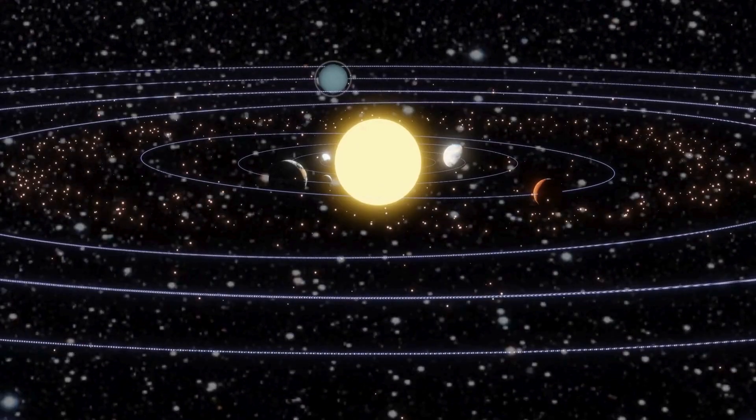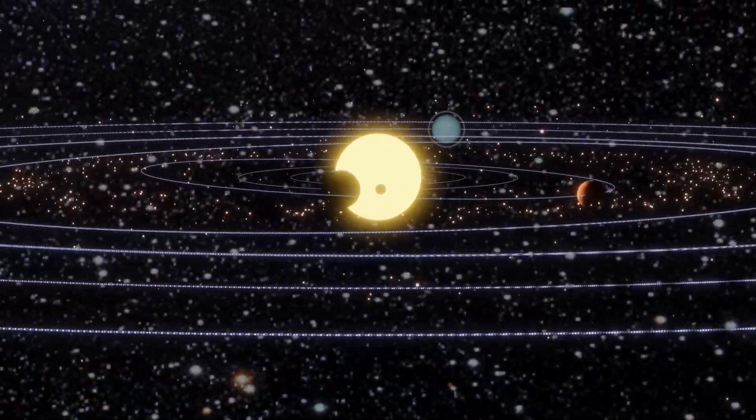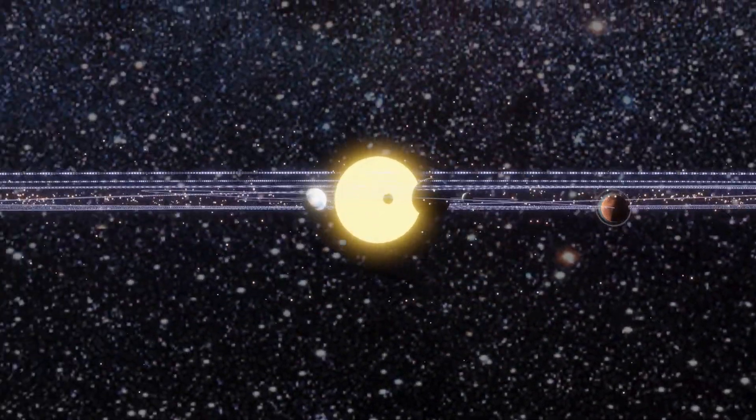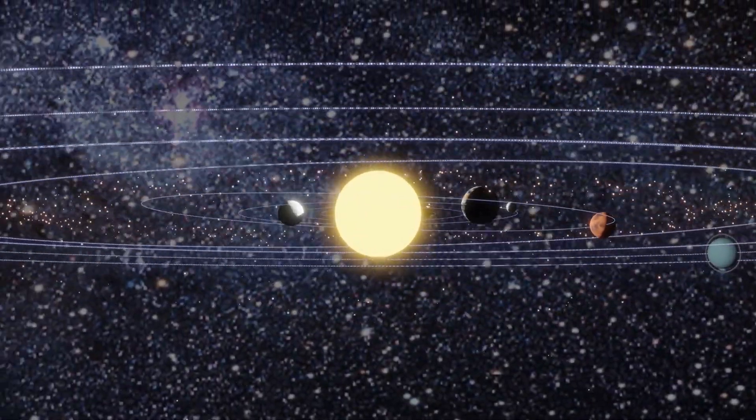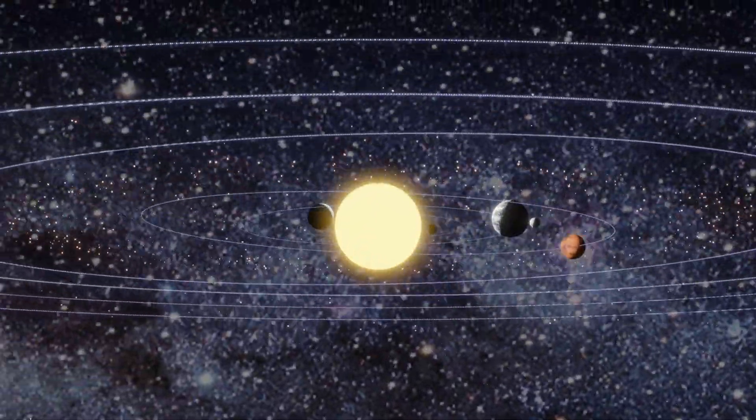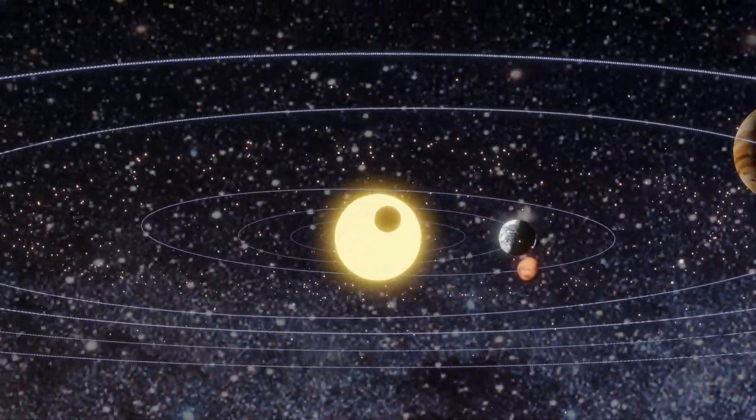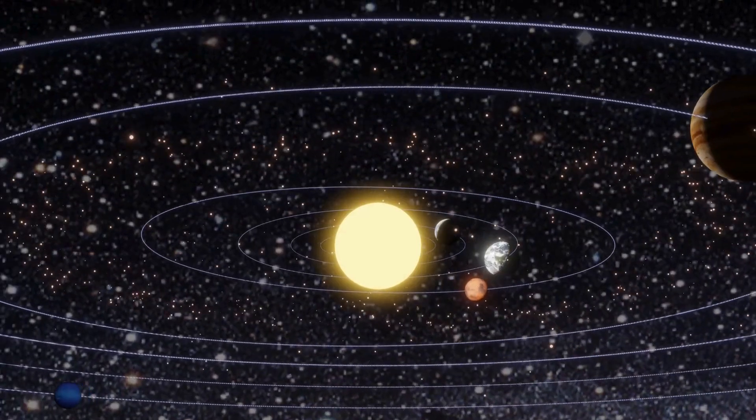But here's the twist: while Ptolemy's theory was ingenious, it was also deeply flawed. It wasn't until the 16th century, when astronomers like Copernicus and Galileo began challenging Ptolemy's ideas, that we realized the Earth wasn't the center after all.